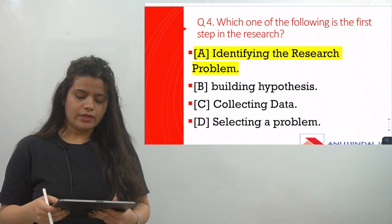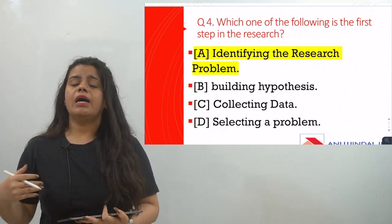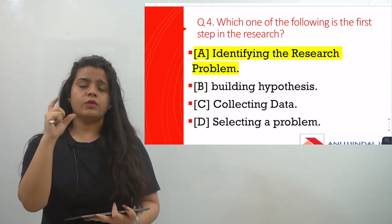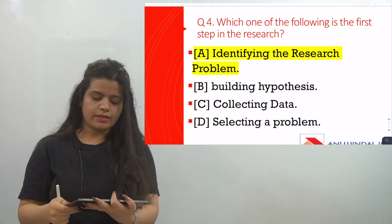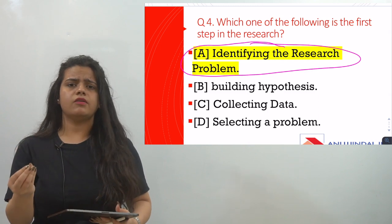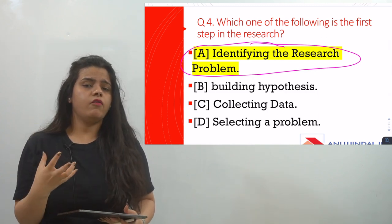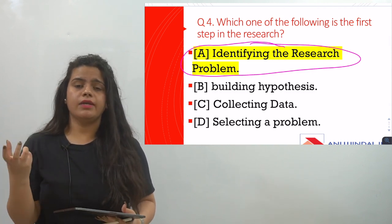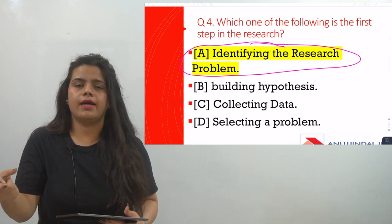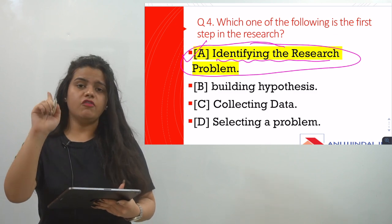The fourth question is: which of the following is the first step in research? You must remember the chronological order — whether data comes first, then hypothesis, then collection of data, then testing. The first step in research is always identifying the research problem. This is basic common sense: whenever we are going to research something, we must first know what we want to find out — what the problem is. Only then do we go for the solution and conduct the research.